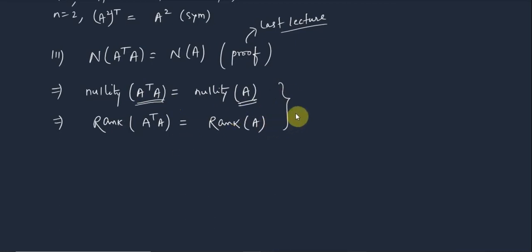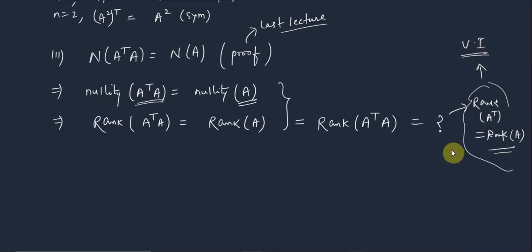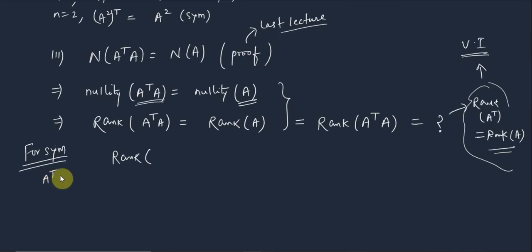There is one additional speciality: rank of A^T·A also equals rank of A^T·A because rank of A^T equals rank of A — that is, taking the transpose does not change the rank. This is an important theorem proved in the matrices playlist. Using this for a symmetric matrix, since A^T = A, replacing A^T by A gives us: rank of A² equals rank of A. This is a very important property.